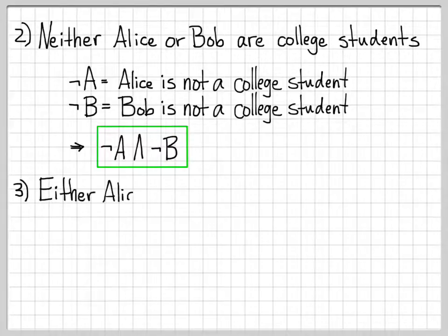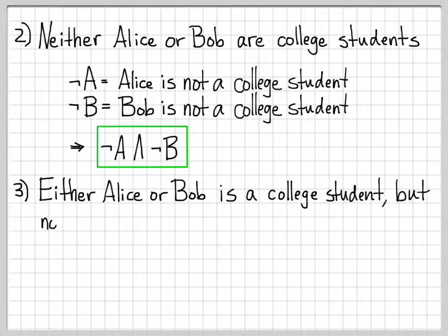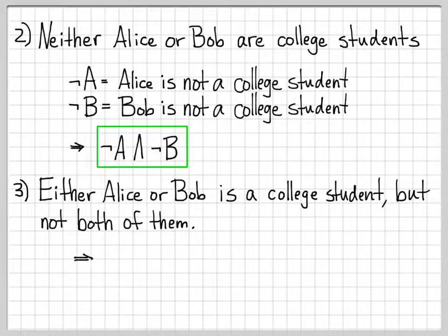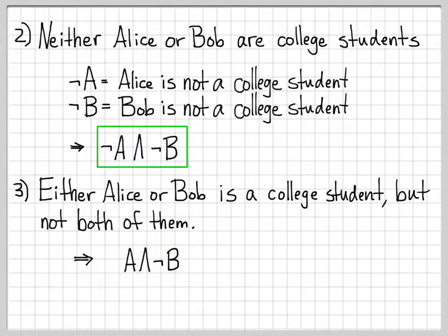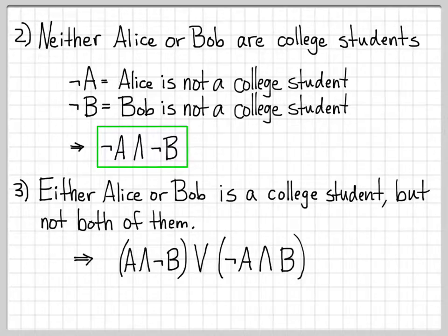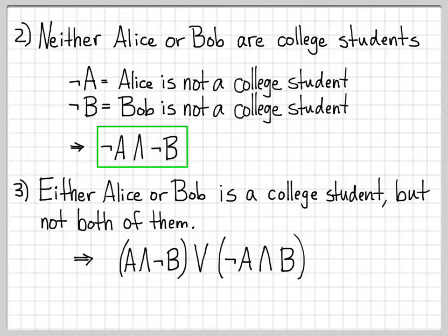Let's do another one. The English sentence is: 'Either Alice or Bob is a college student, but not both of them.' One case is Alice being a college student and Bob not — that's A ∧ ¬B. The other case is the reverse: ¬A ∧ B, meaning Alice is not a college student and Bob is. So the full expression is (A ∧ ¬B) ∨ (¬A ∧ B), representing exactly one of them being a college student.